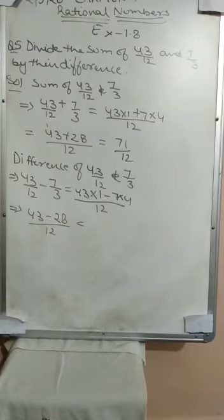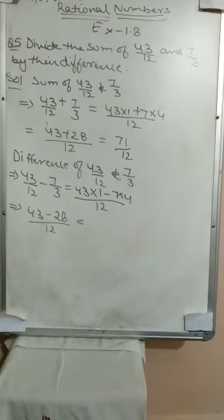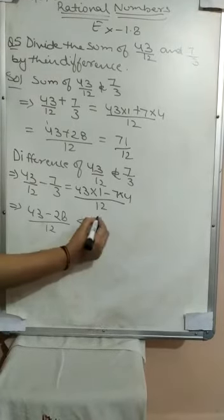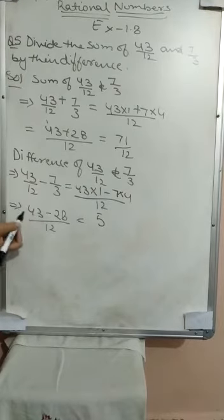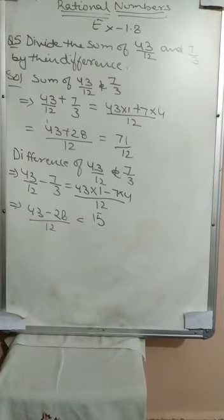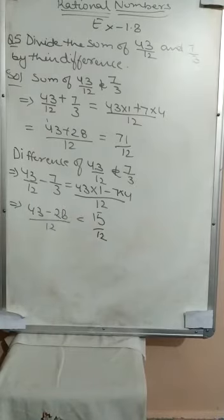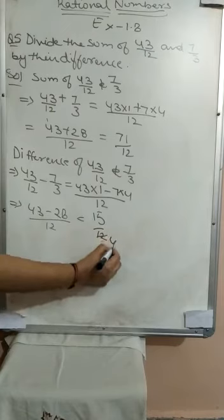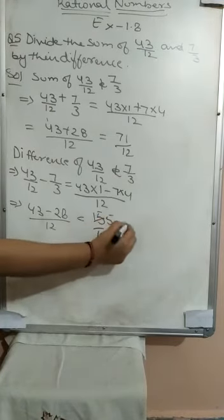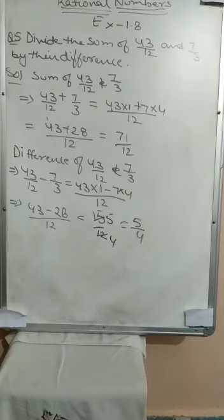Now, 13 minus 8 is 5, and 3 minus 2 is 1, so what is left is 15/12. Now, 15 and 12 are both in the 3 times table, so they can be reduced. 3 fours are 12, 3 fives are 15. So the difference is 5/4.